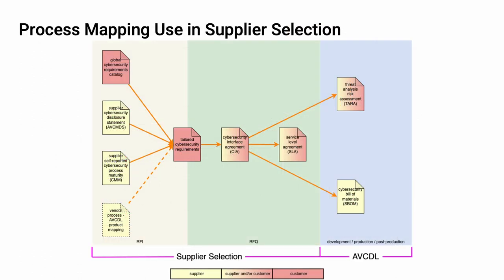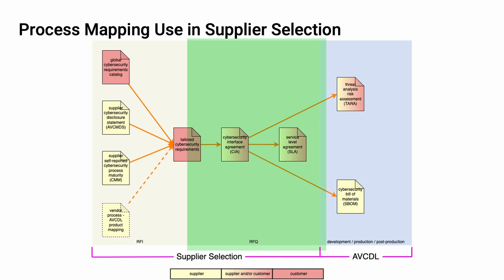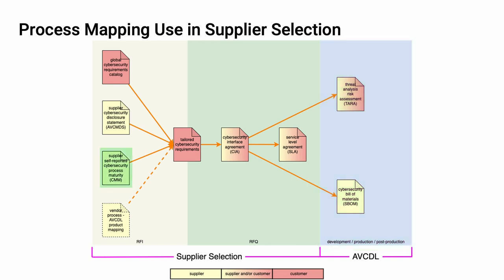This diagram shows the major documents used in both the supplier selection — request for information (RFI) and request for quote (RFQ) activities — as well as the development, production, and post-production activities. Although the supplier self-reported maturity and the supplier cybersecurity manufacturers disclosure statement are the two primary documents enabling the creation of the tailored cybersecurity requirements and the cybersecurity interface agreement, it is the vendor process to AVCDL product mapping that allows us to do this when there are established supplier processes. It's critical that the processes being addressed be clearly understood by both the supplier and the customer.